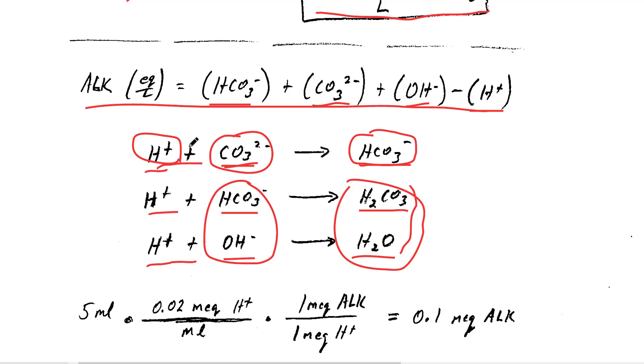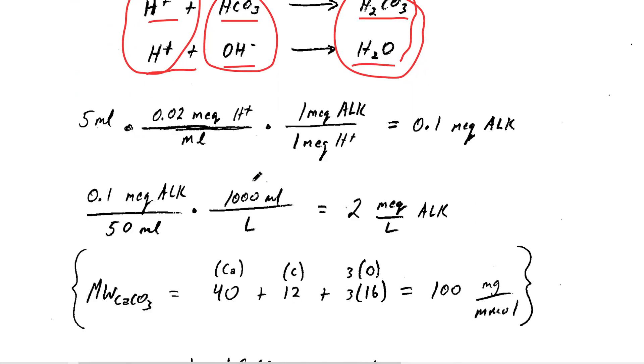So the amount of H+ ions that we add tells us the amount of alkalinity that we had in solution. Let's figure that out.